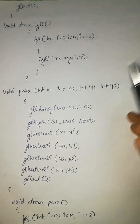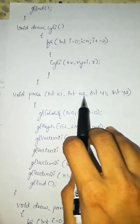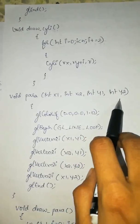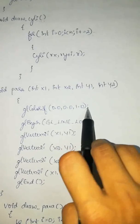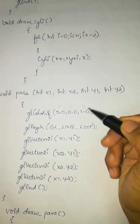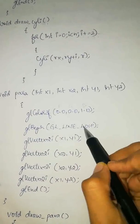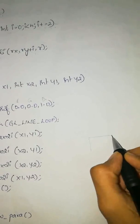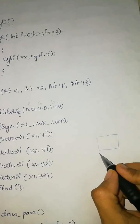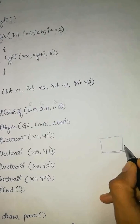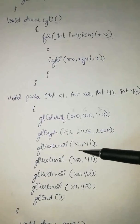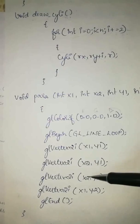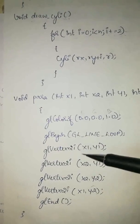Now let us look at the parallel pipe. Void para(int x1, int x2, int y1, int y2) — these are the four coordinates of a rectangle used iteratively to form a parallelepiped. GL_color_3f(0.0, 0.0, 1.0): R, G and B — blue is set to 1, so the parallel pipe will be blue. Using GL_BEGIN and GL_LINE_LOOP, you form the rectangle first and then the parallelepiped. The vertices are: gl_vertex2i(x1, y1), gl_vertex2i(x2, y1), gl_vertex2i(x2, y2) and gl_vertex2i(x1, y2).